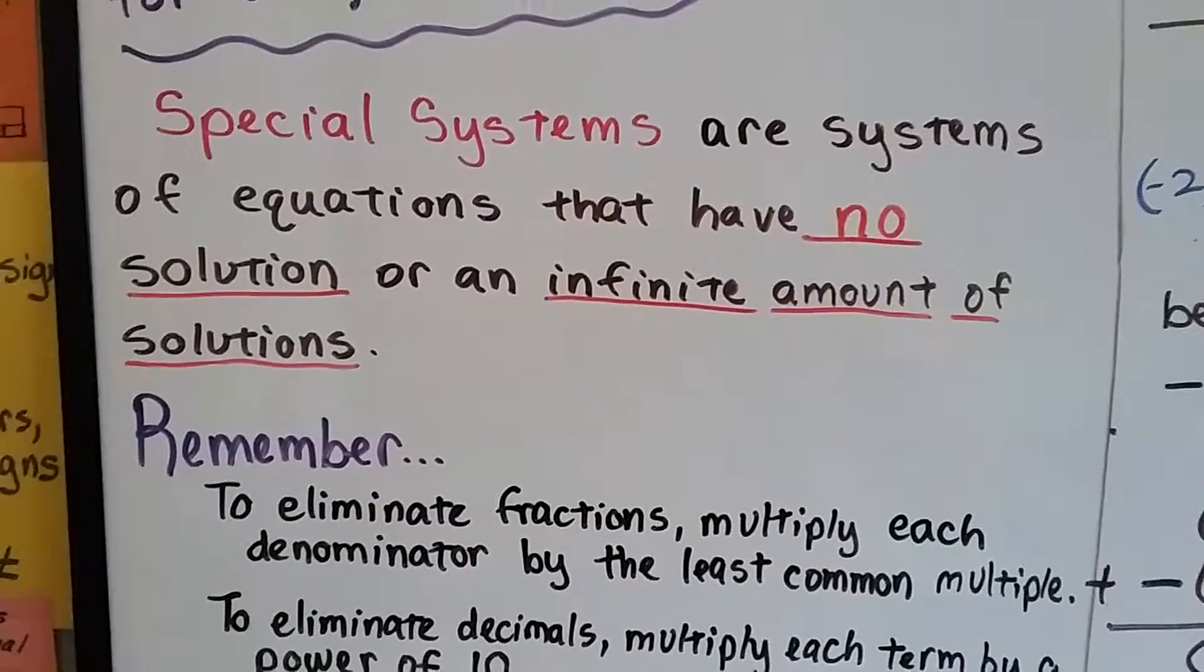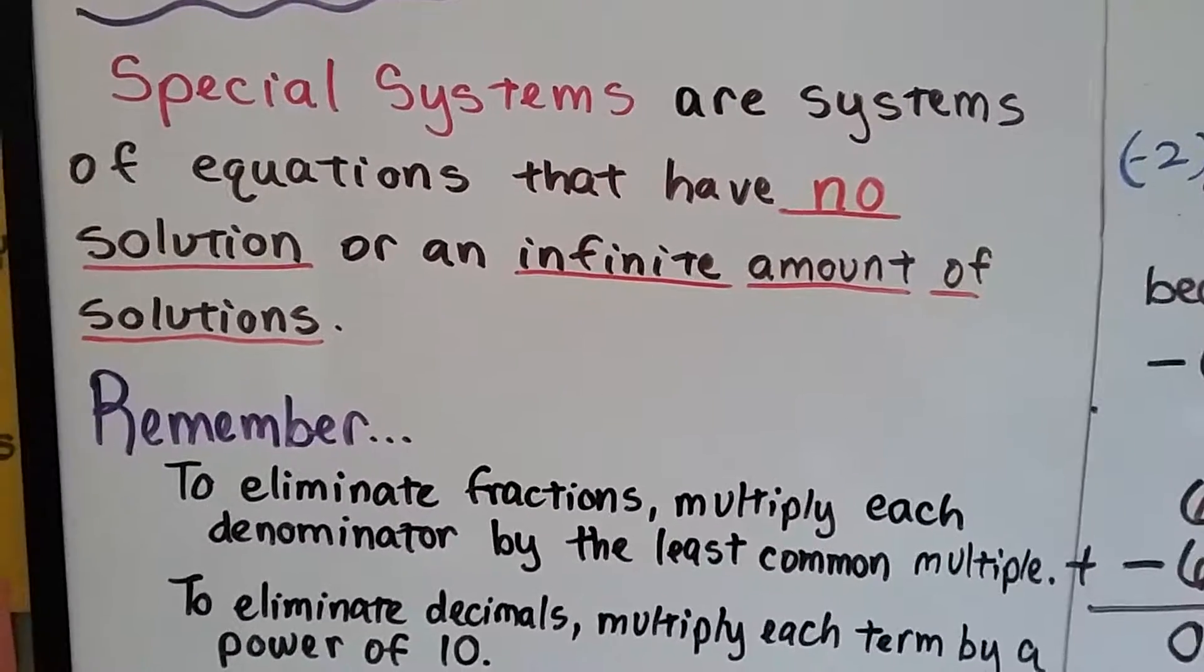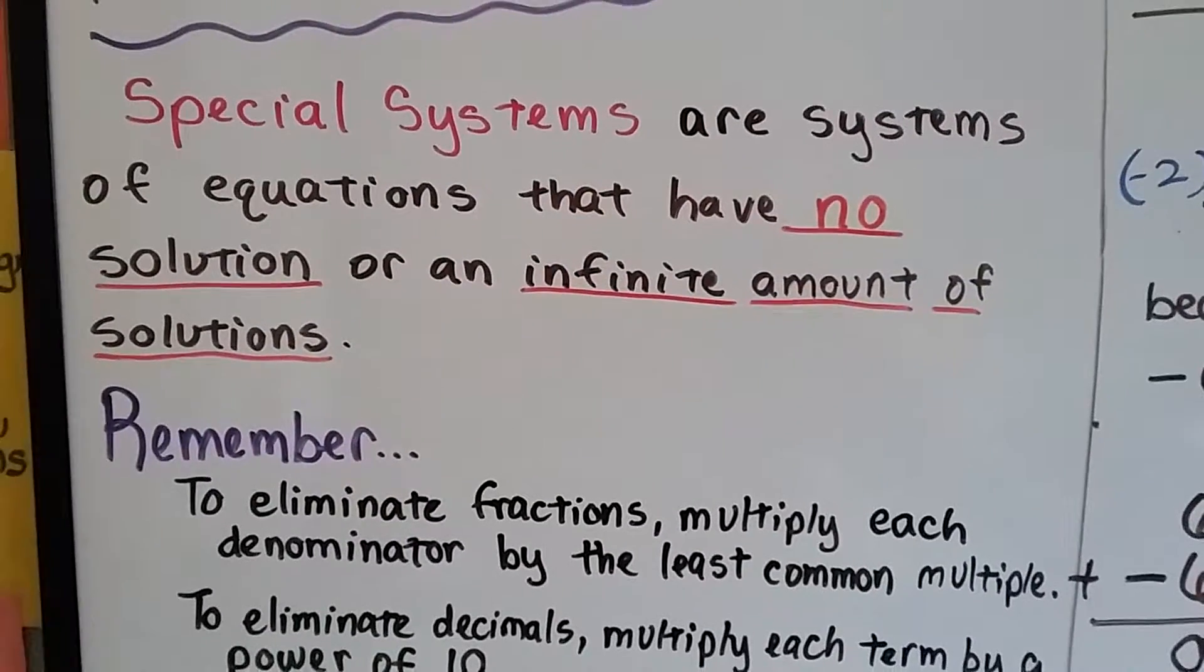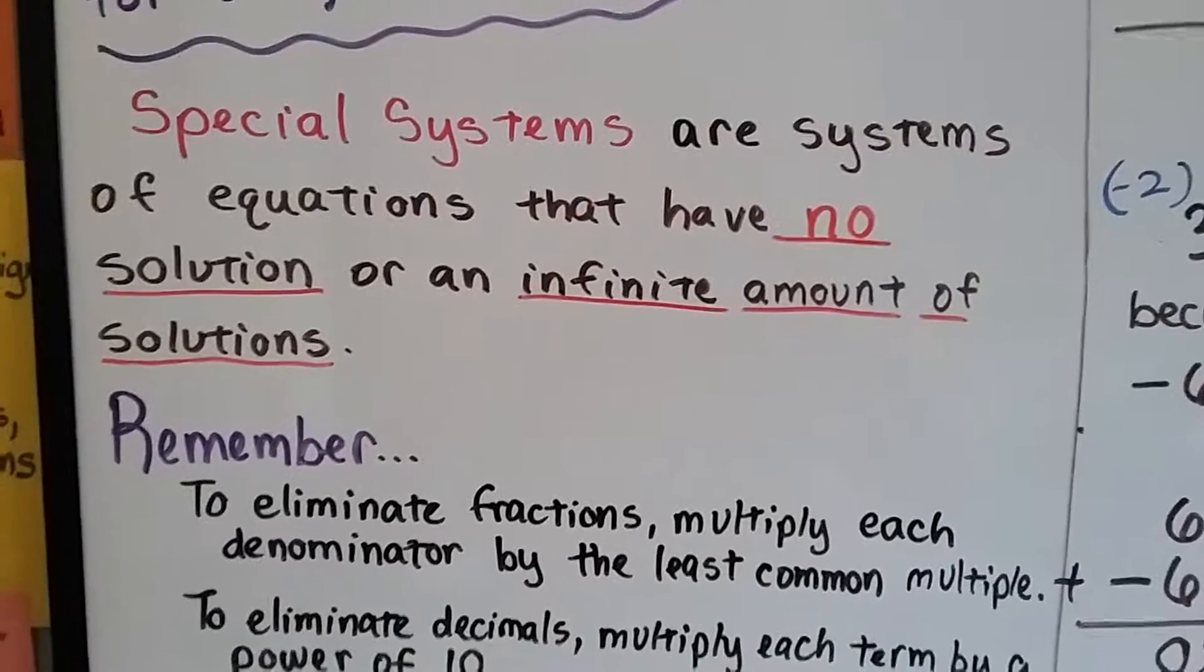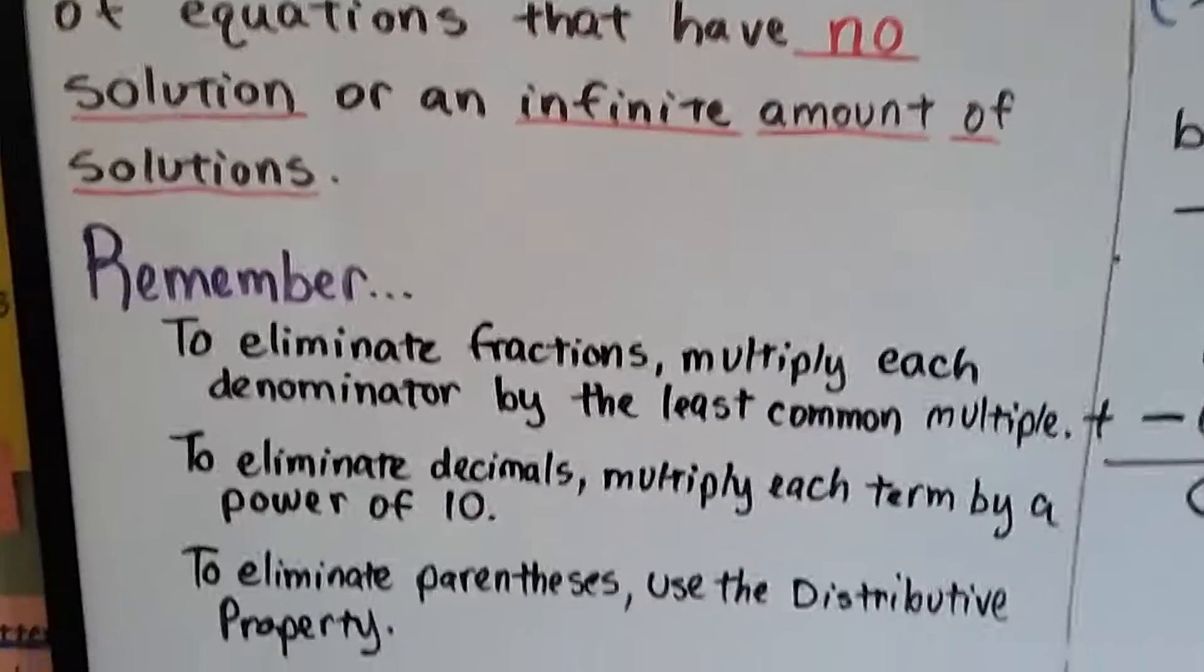Special systems are systems of equations that have no solution or an infinite amount of solutions. That's why they're special - they either have no solution or an infinite amount.